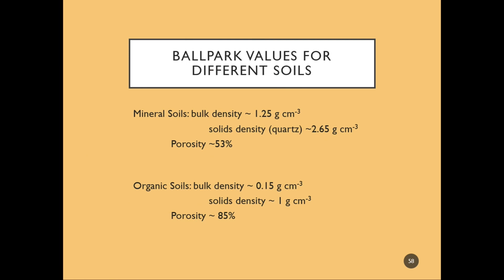For mineral soils, bulk density is approximately 1.25 g/cm³, while particle density is 2.65 g/cm³, and porosity is approximately 53%. For organic-based soils such as a wetland bog, bulk density may be as low as 0.15 g/cm³.